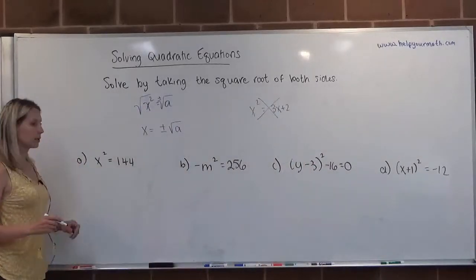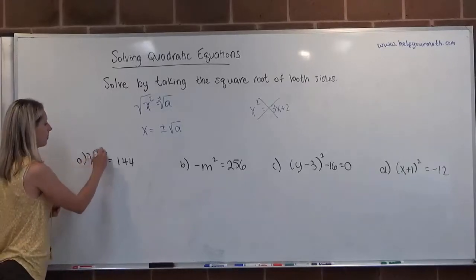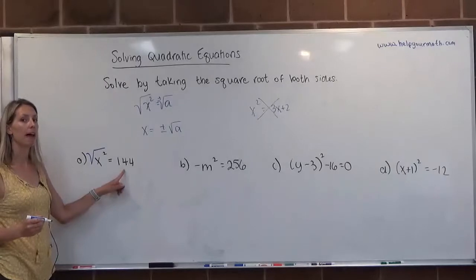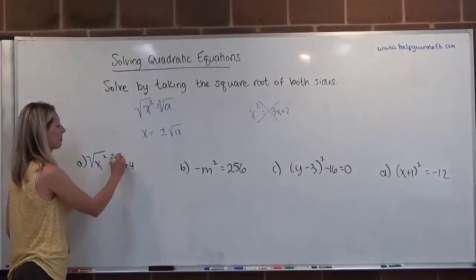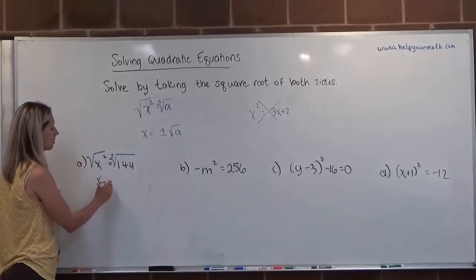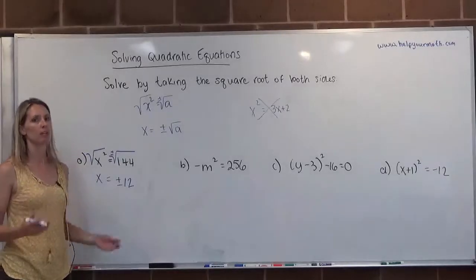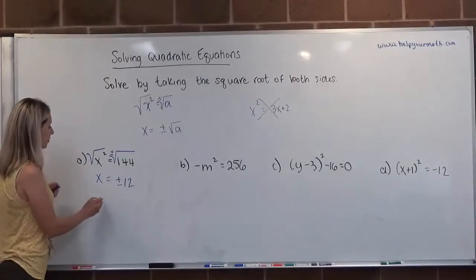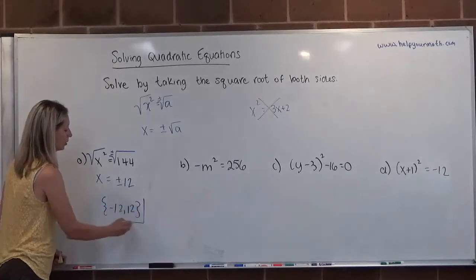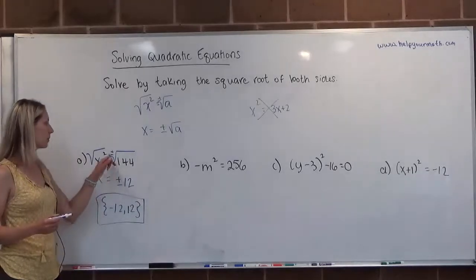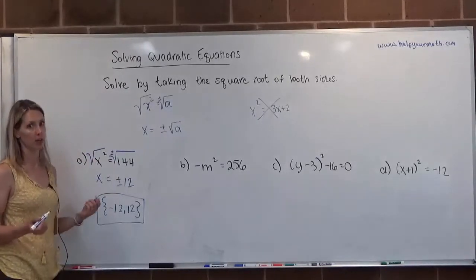For letter a, we have x squared equals 144. To get x by itself and undo the square, we take the square root of both sides. When you take the square root of the constant side, we include the plus or minus — the positive or negative. So this becomes x equals positive or negative 12. This has two solutions: negative 12 and positive 12. That's why it's so important to be vigilant about including that plus or minus sign.